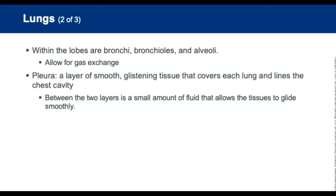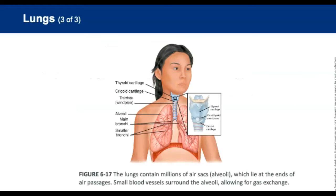The pleura facilitates lung movement. The visceral pleura covers the lungs, and the parietal pleura lines the chest wall. A thin layer of fluid helps facilitate movement of the lungs. The pleural space is the potential space between the two pleura. This figure shows the structure of the lungs.